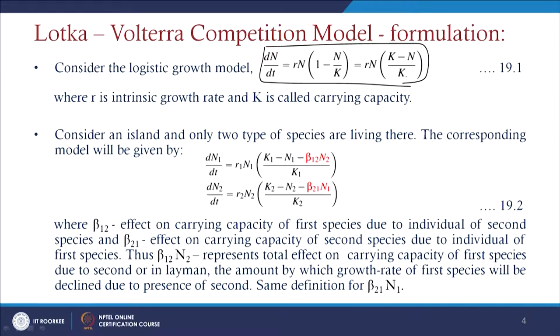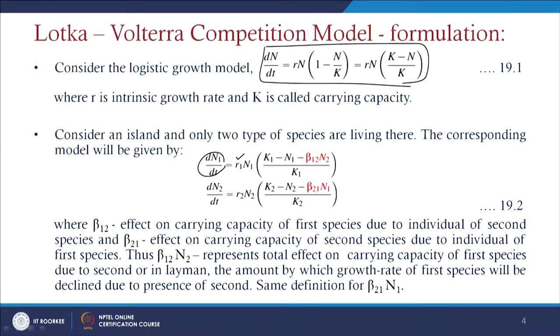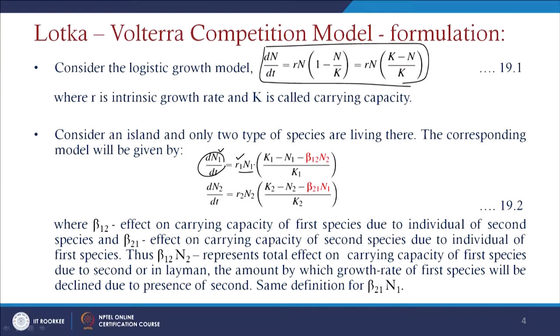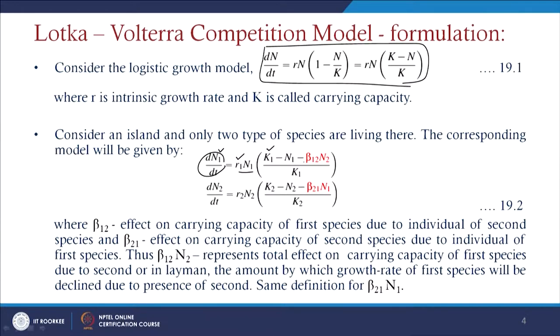If we consider an island where only two types of species are living, the model is given by dn1/dt, where R1 is the intrinsic growth rate corresponding to atmospheric conditions or available resources. The population level changes as R1·n1, and it is controlled by different factors — including other species or constraints present. A decline term −β12·n2 is introduced to account for the effect of the second species.